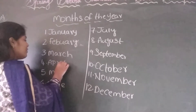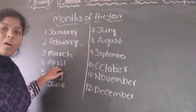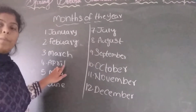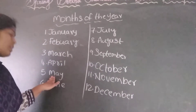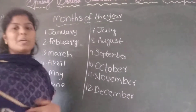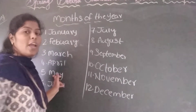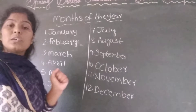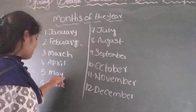In April we will feel very hot because of the sun. It is a summer month. May is the fifth month. We all get summer holidays in May, right? May is also a very hot month. In May we all drink cool drinks, soft drinks, milkshakes, and eat ice cream.